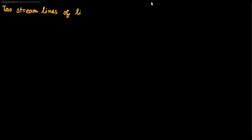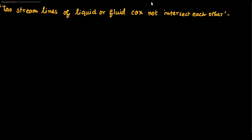Two streamlines of liquid or fluid cannot intersect each other for steady flow of liquid. Why? Two streamlines of liquid or fluid cannot intersect each other — why?